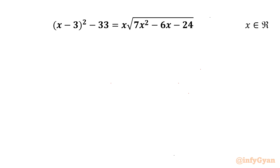Welcome back to InfiGyan my dear friends. In this video we are going to solve one very interesting question from radical equations. The problem is: (x minus 3) whole square minus 33 equal to x times square root of (7x squared minus 6x minus 24). We have to find out all real solutions.